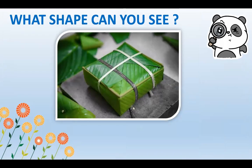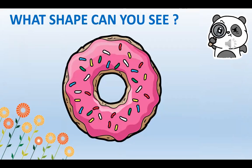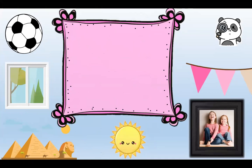How about this one? It's a spring cake. What shape can you see? It's a square. And how about this one? What shape can you see in this picture? It's a circle. Good job!